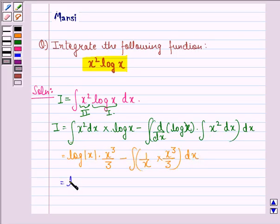This can be written as log of mod x into x cubed by 3. Now, this x gets cancelled with one of the x and in the numerator we have x squared now. So we have minus 1 by 3 integral x squared dx.